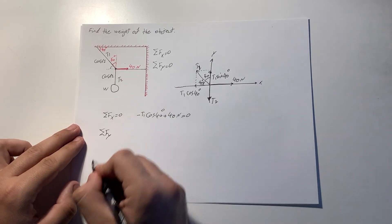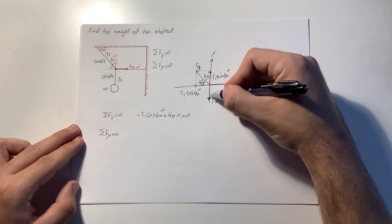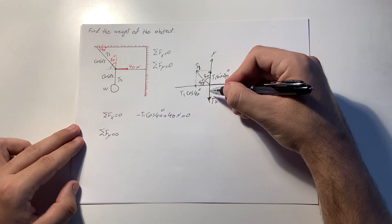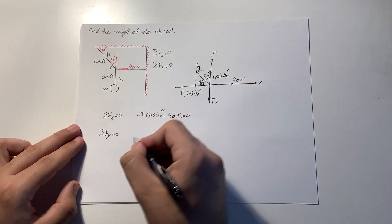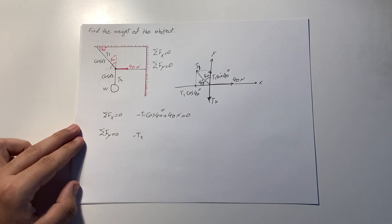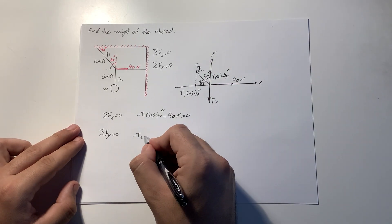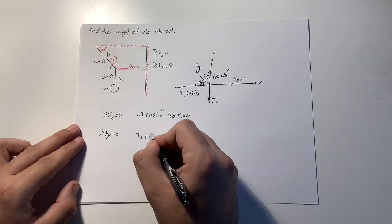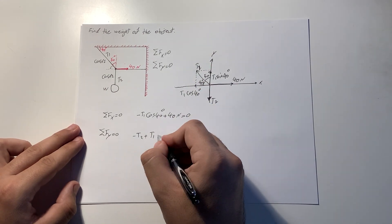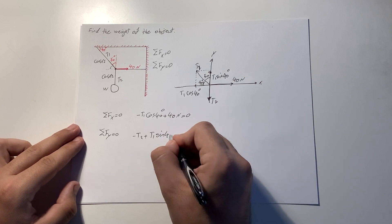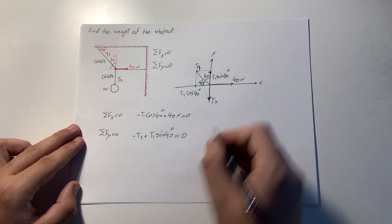For the y-direction, we have T2 — which equals the weight of the object — and T1 sine of 40 degrees. So the y-direction equation is: negative T2 plus T1 sine of 40 degrees equals zero.